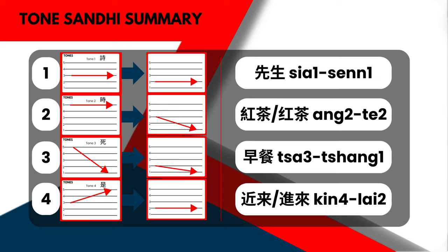早餐, meaning breakfast. By itself, the first syllable is 早. In this context, the first syllable changes and it becomes 早餐. The next example means 'to come in.' By itself, the first syllable is pronounced one way. In this context, the first syllable changes when combined with the second syllable.